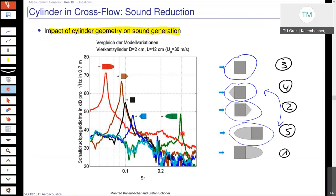Do you have at least the idea why the frequency is increasing or decreasing according to the different geometries? Is there any idea? How could we investigate this? Maybe for lower frequencies the object appears larger. But why do you get a difference in the wavelengths?